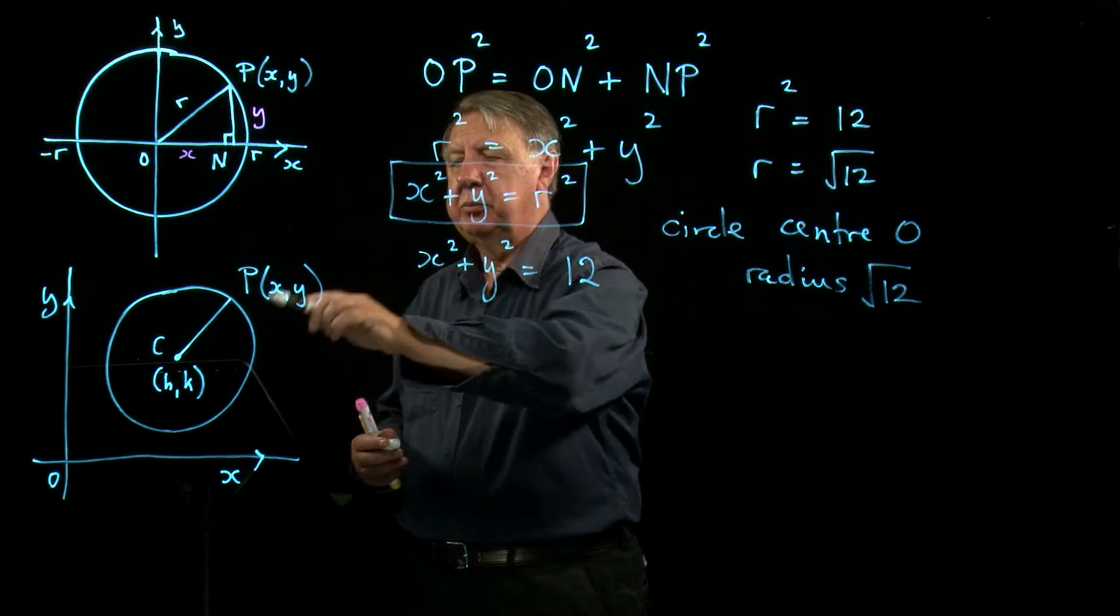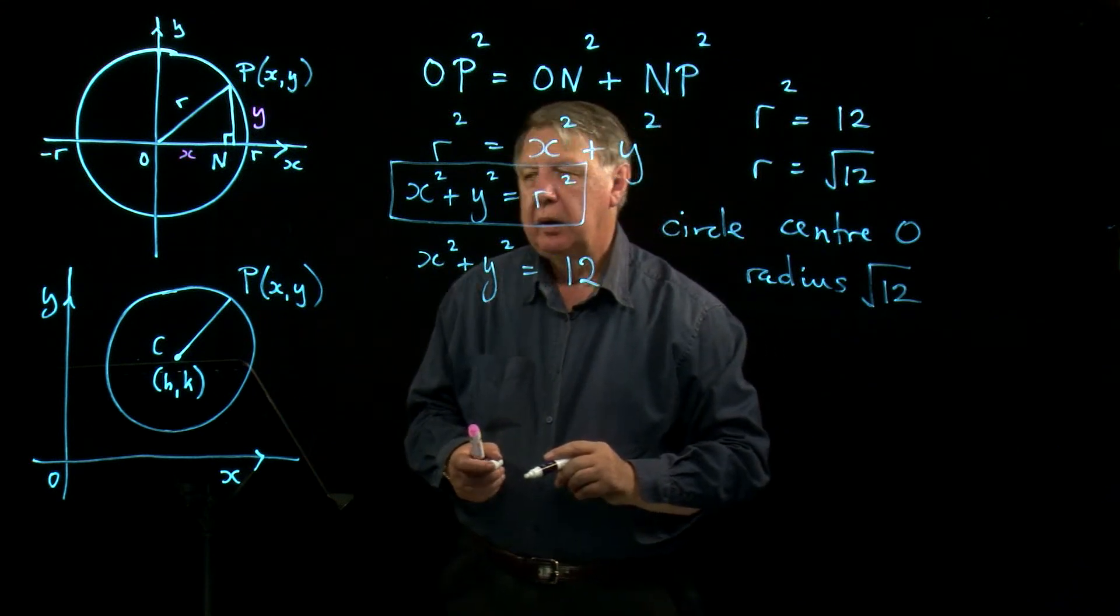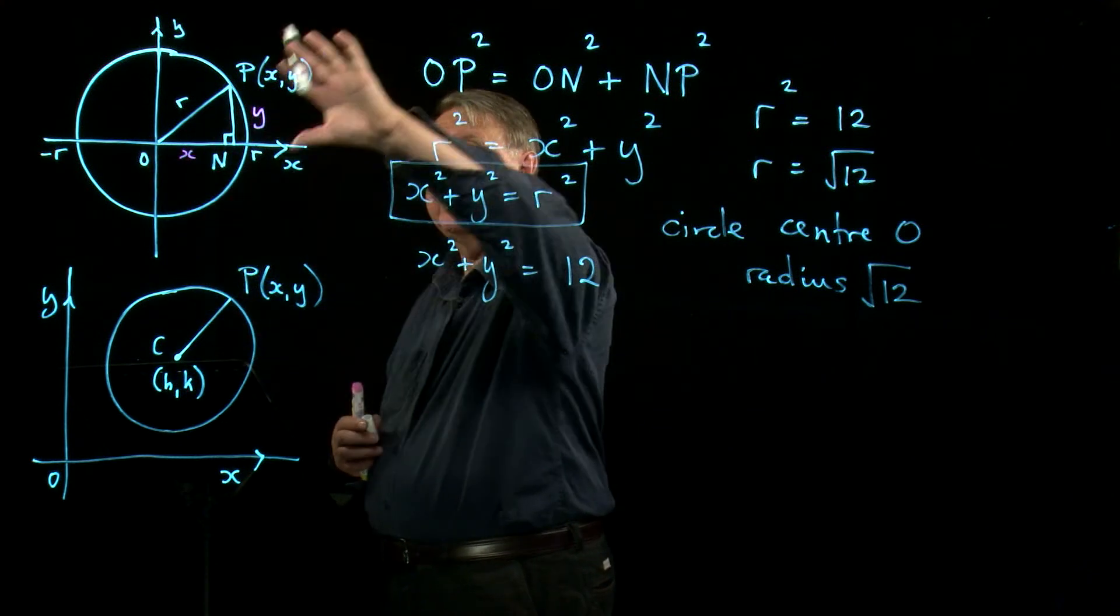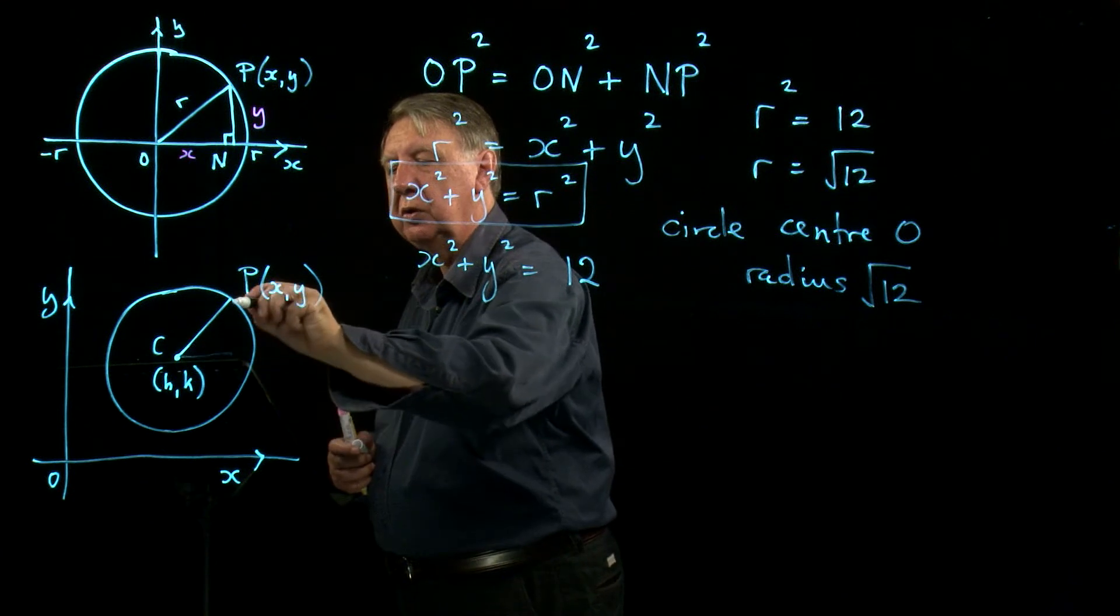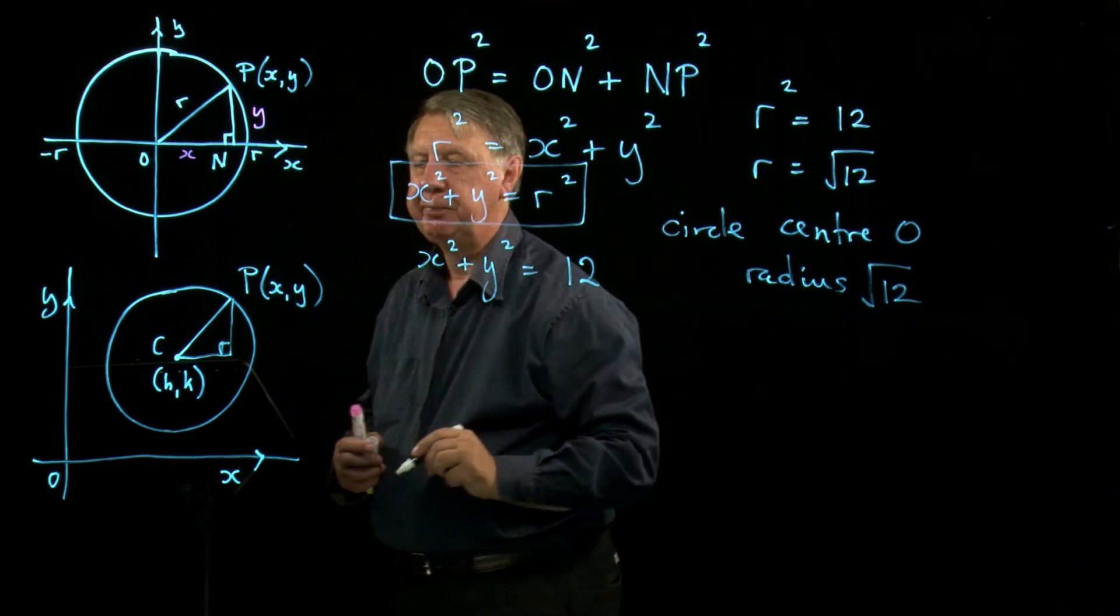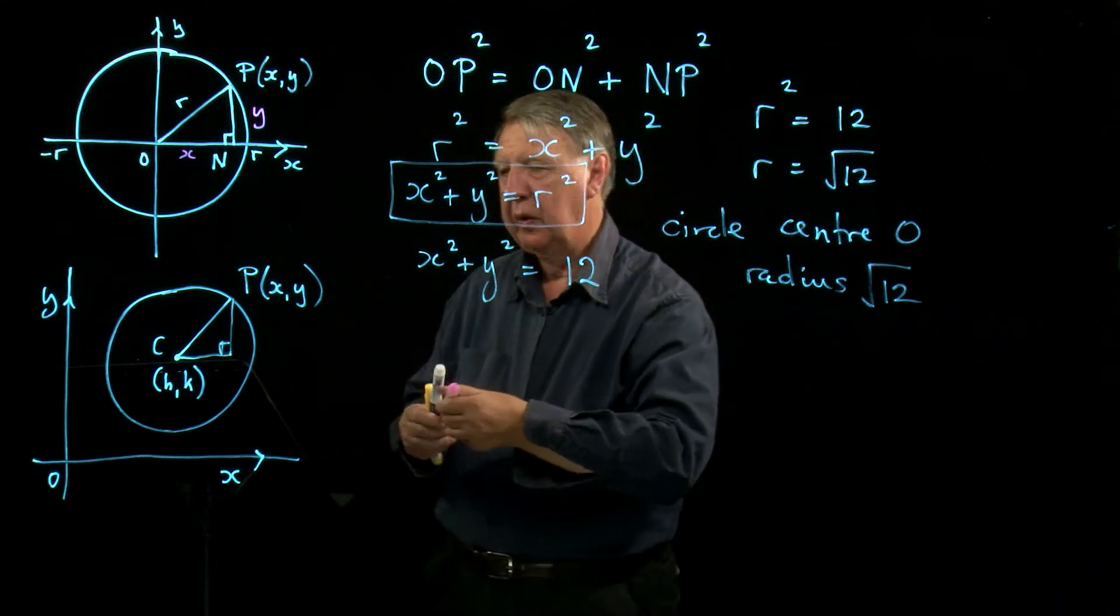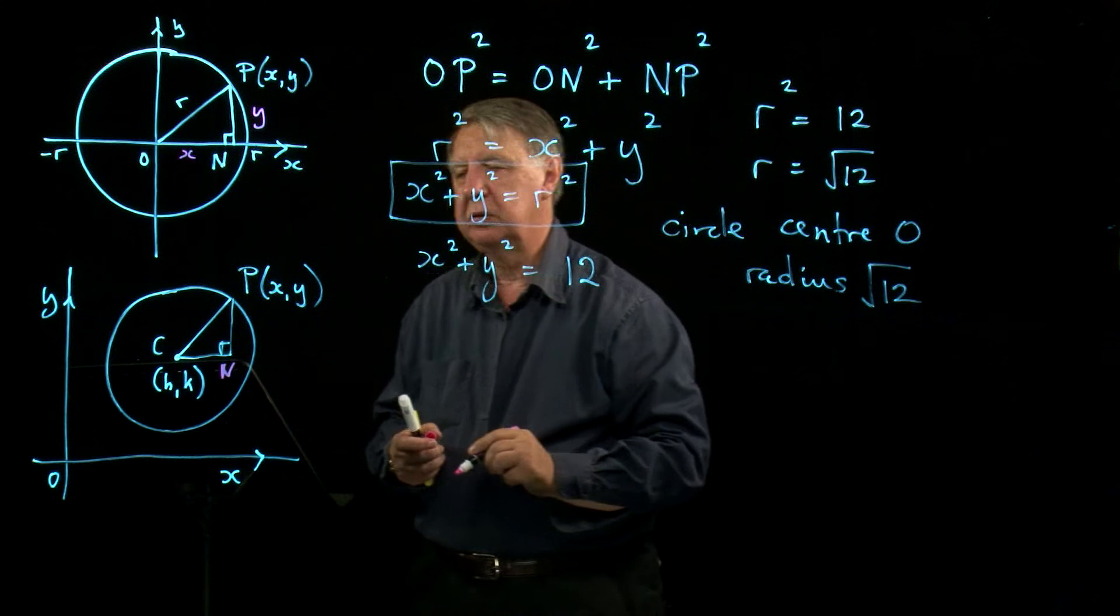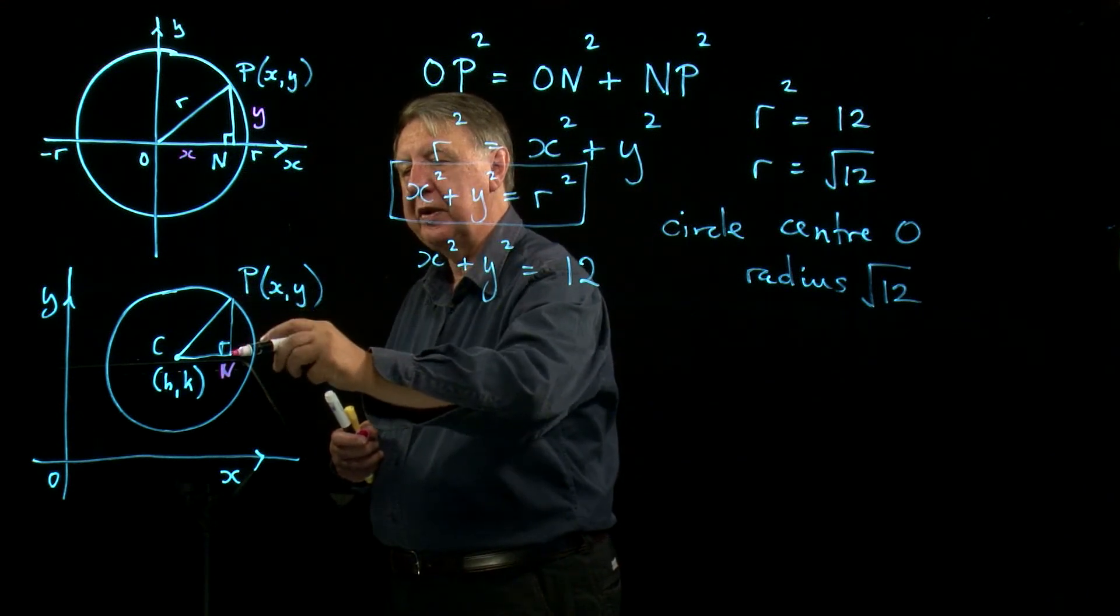Now let's move on to the second diagram. In this diagram, the center has been moved. The whole circle has been moved as a result. But I can still draw a right angle triangle there. Now let's look at the distances involved here. We'll call that N again.